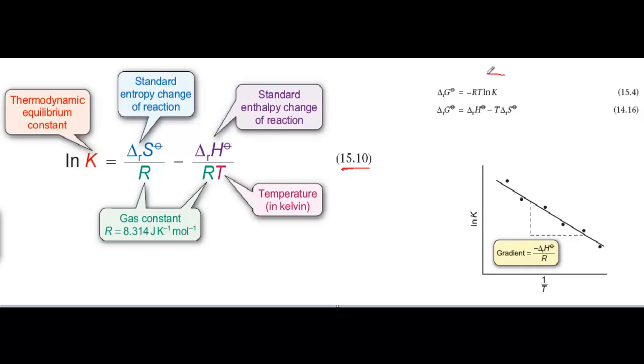It's derived from two equations that you should have met already: delta G equals minus RT log K, and delta G equals delta H minus T delta S. Now both of these are expressions for the standard Gibbs energy of reaction, delta G, and if we put them equal to one another, we can eliminate the delta G term, and with a little rearrangement we get equation 15.10.